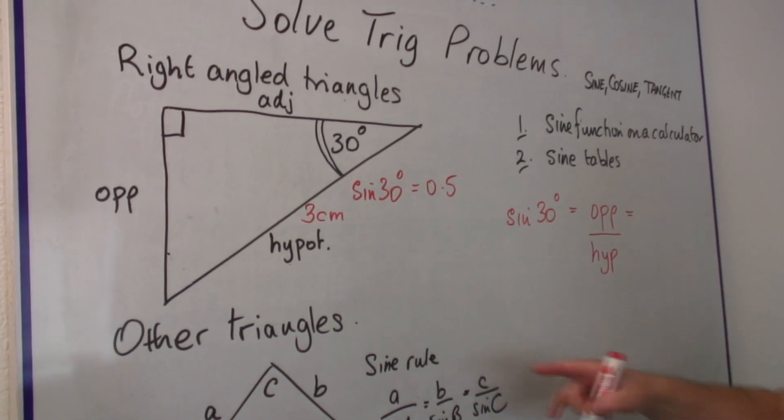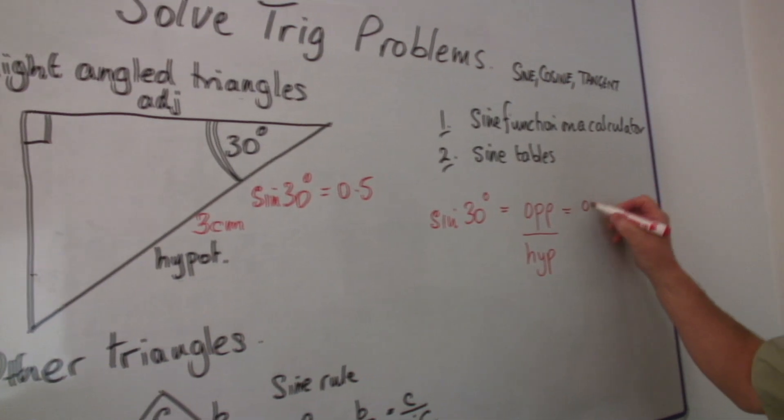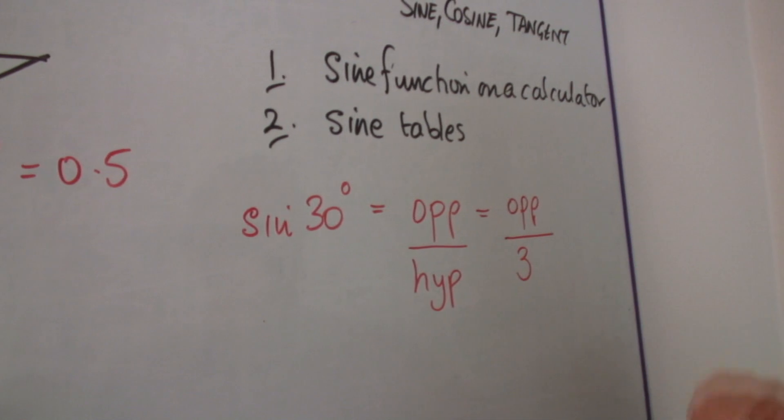And obviously, we know the hypotenuse, we don't know the opposite side. That's what we'd like to work out. So the hypotenuse is 3.